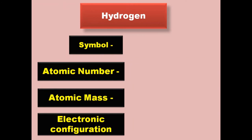Hello everyone, welcome to my channel. In this video, I will tell you the symbol of the periodic table of 118 elements, atomic number, atomic mass and electronic configuration. Let's start.